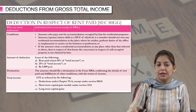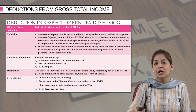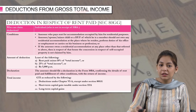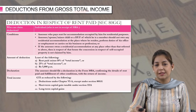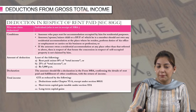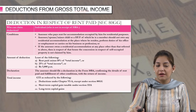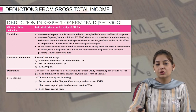When we say rent paid minus 10 percent of total income or 25 percent of total income, we need to know how to calculate this total income. This is the adjustment made to your gross total income. Your gross total income will be reduced by all deductions under section 80C to 80U except the deduction under section 80GG. Next, if there are any short-term capital gains taxable under section 111A, you reduce that amount also. And lastly, if you have any long-term capital gains, that will also be reduced to find out this adjusted total income.